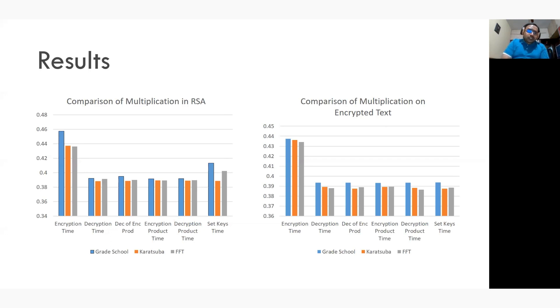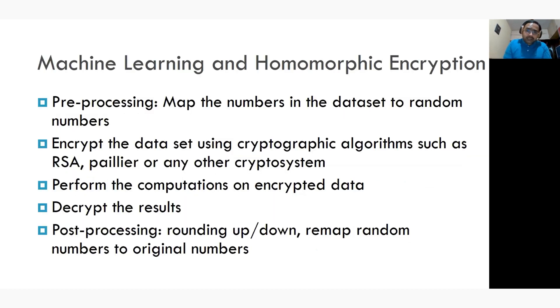Now this is the result which shows the computation time of RSA algorithm. It shows the time it takes to perform multiplication operation on the plaintext and on the encrypted text. It shows encryption time, decryption time, encryption product time and decryption product time. If you see the results here, the Karatsuba is more stable. FFT is also giving better results compared to the grade school method. These results give us hope that this can be used on low-resource devices such as Raspberry Pi.